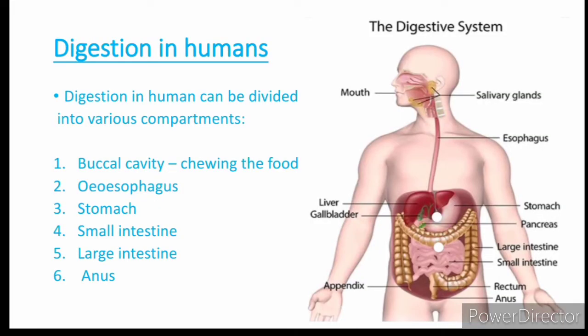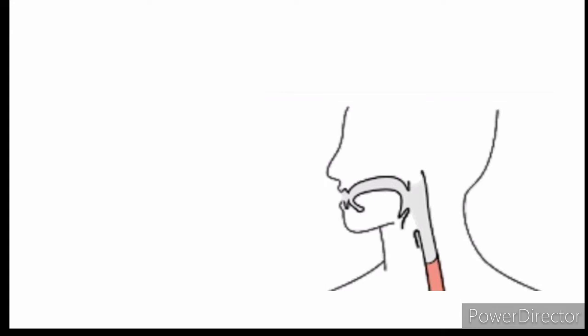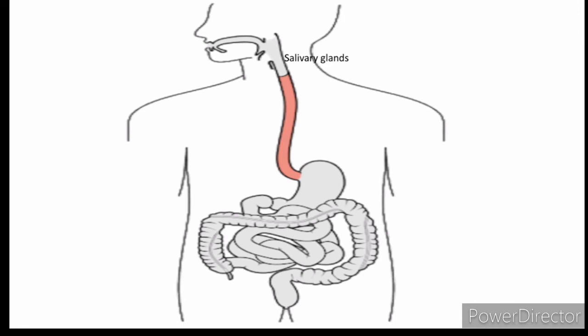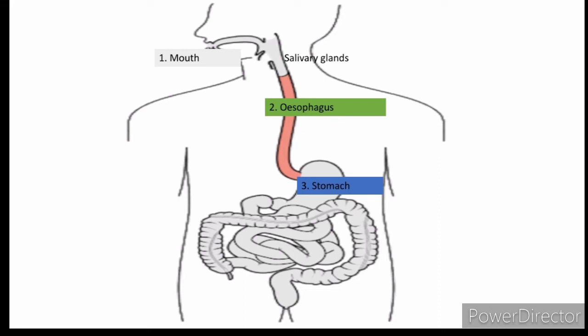Digestion in humans: the breaking down of complex food material into simpler form is digestion. Digestion starts from the mouth with chewing of food. Saliva produced by the salivary glands mixes with the food so that it easily passes from the esophagus to the stomach, where it is again broken down into simpler form. It then passes to the small intestine, where nutrients are absorbed by the cells and many enzymes help in the breaking down of food.